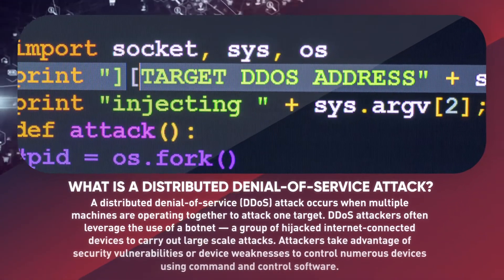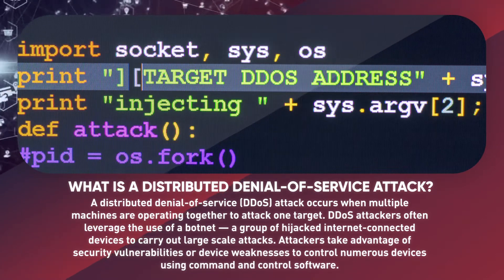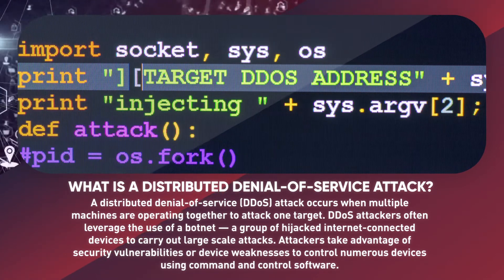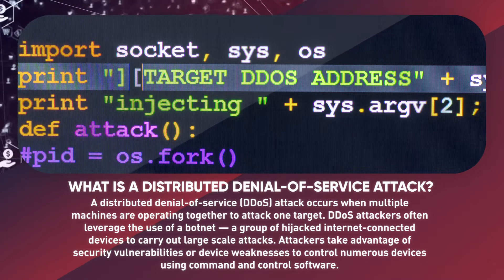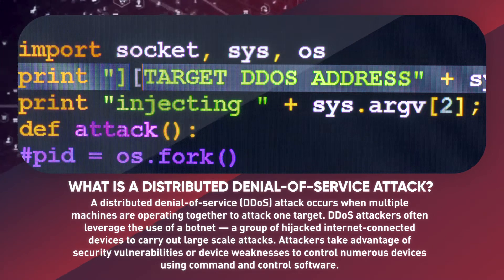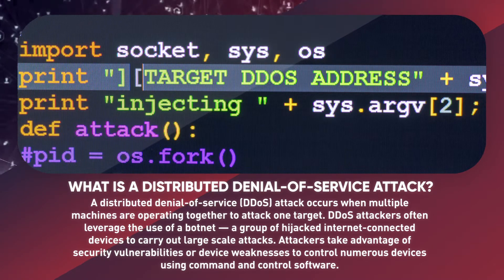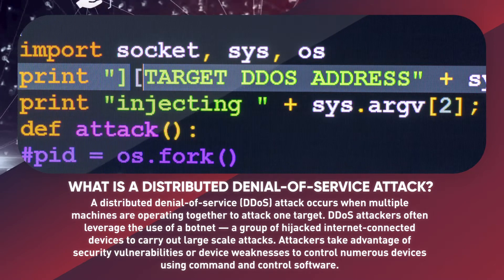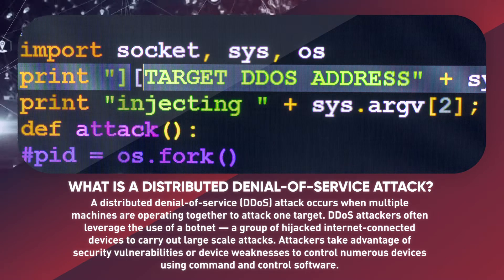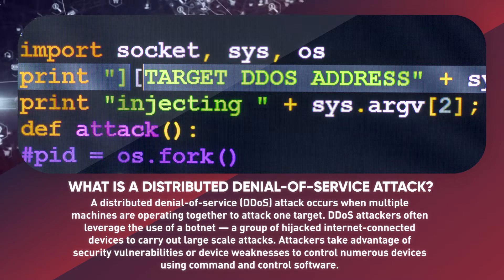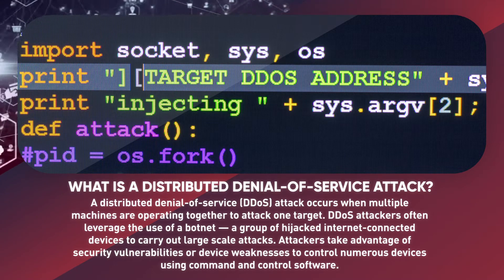A distributed denial-of-service attack occurs when multiple machines are operating together to attack one target. DDoS attackers often leverage the use of a botnet — a group of hijacked, internet-connected devices — to carry out large-scale attacks. Attackers take advantage of security vulnerabilities or device weaknesses to control numerous devices using command and control software.